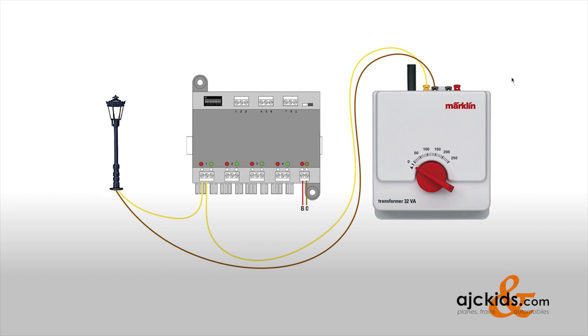So in this example, we took our good old transformer and we're using the accessory power side, which you know is brown and yellow, to power some of our streetlights. For this, we run a brown wire to our streetlight and the yellow wire from the streetlight, instead of going directly back to the transformer, now goes through the M84 decoder and gets switched by port number one of the M84 decoder.